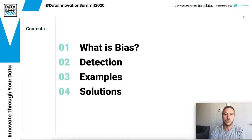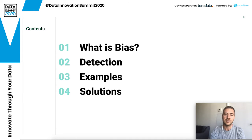I've structured my talk into a few different sections. The first one is: what is bias? The second is detection, then examples, and finally solutions.